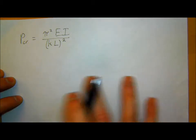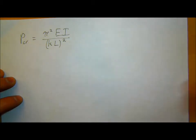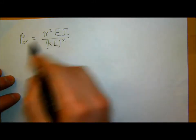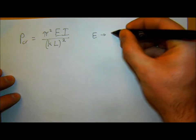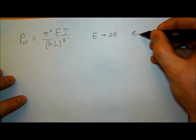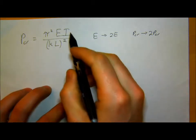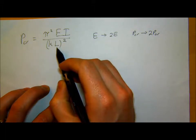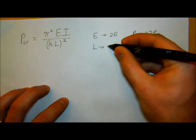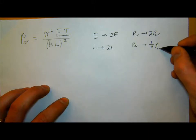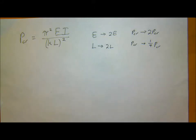A couple things to point out first: the sensitivity to buckling of different parameters. When you're working with different materials, if you have a material that is twice as stiff — if E doubles to 2E — then your P critical goes to 2·P critical. So if a material is twice as stiff, it's twice as difficult to buckle. For length: if my length is twice as long, my P critical is then a quarter — four times easier to buckle. If I have a really short stubby beam, it's generally pretty difficult to buckle, and as I increase that beam length, it gets quadratically easier to buckle.